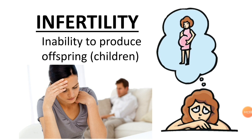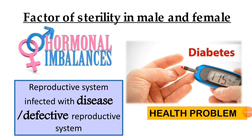Infertility is the inability to produce offspring or children. These are the factors of sterility in male and female. Both male and female can have the problem of hormonal imbalance, because their hormones are not balanced. Most of them also have health problems such as diabetes, so the reproductive system is infected with disease or has a defective reproductive system.